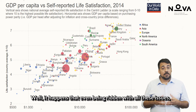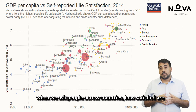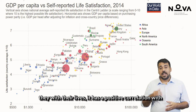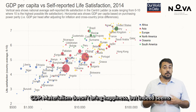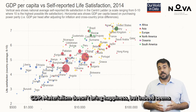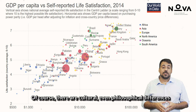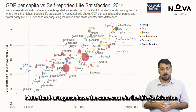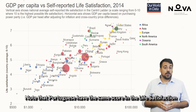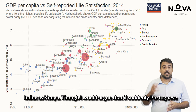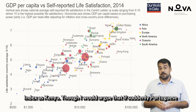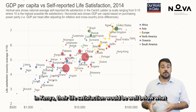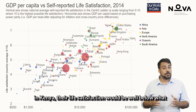Well, it happens that even being ridden with all these issues, when we ask people across countries how satisfied they are with their lives, it has a positive correlation with GDP. Materialism doesn't bring happiness, but indeed seems to help. Of course, there are cultural and even philosophical differences around the concept of being satisfied. Note that Portuguese have the same score in the life satisfaction index as Kenya, though I would argue that if Portuguese were forced to live under the same standards as in Kenya, their life satisfaction would be well below what they reported.